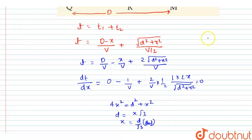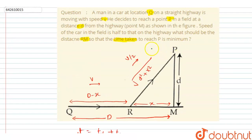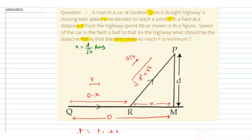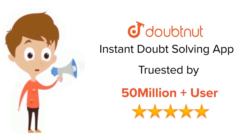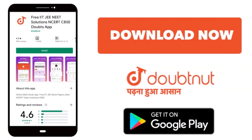So the value of x is d/√3, and this is what is to be calculated in this question. Looking at the question, RM = d/√3, and this is our answer. For class 6 to 12, IIT JEE, and NEET level — trusted by more than 5 crore students — download the DoubtNet app today.